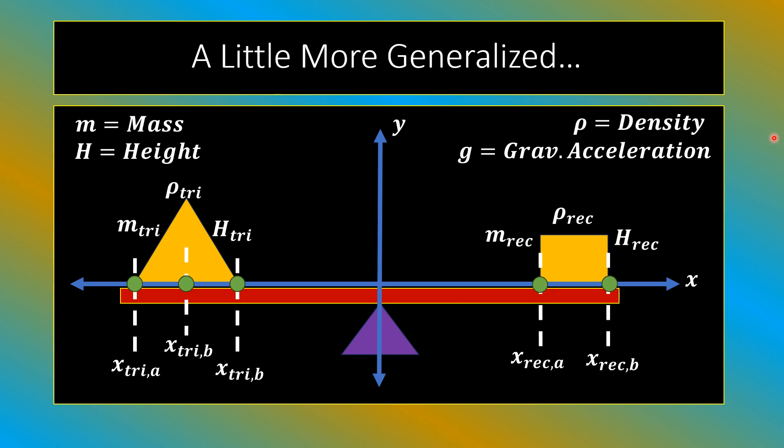We think of these shapes as being located on the xy-plane, where the x-axis runs along the surface of the lever, and the y-axis is perpendicular to the x-axis and intersects with the fulcrum of the lever. We also specify a few points in green. Note that x-tri b is actually halfway between x-tri a and x-tri c.